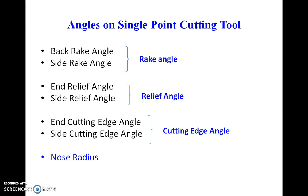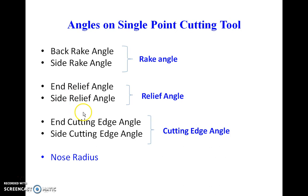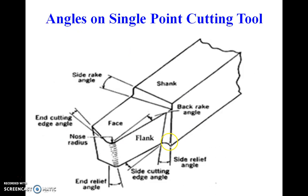We will now take the second part of cutting tool geometry: the various angles provided on the single point cutting tool. These can be the rake angle, relief angle, cutting edge angle, and nose radius. The rake angle may be the back rake angle or side rake angle. The relief angle may be the end relief angle or side relief angle. The cutting edge angle may be the end cutting edge angle or side cutting edge angle.